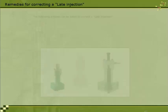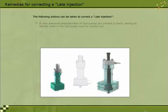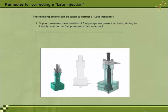If poor pressure characteristics of fuel pumps are present, a check aiming to identify the fault within the fuel pump must be carried out. Adjust the fuel pump to correct lead, per manufacturer's instructions. Adjust the VIT.